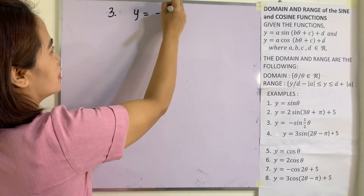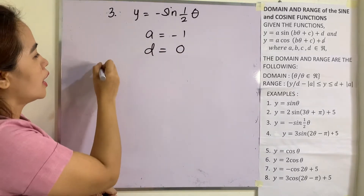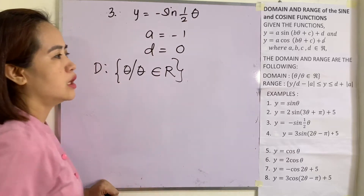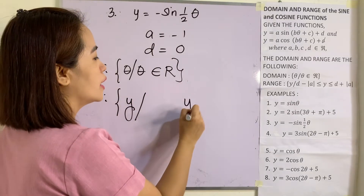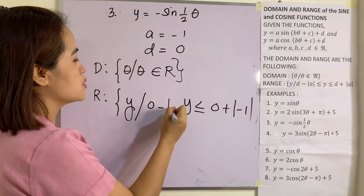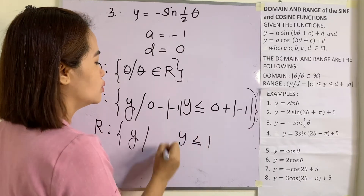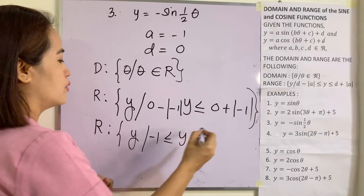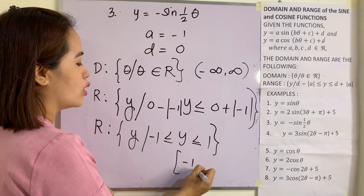Example 3: y = −sin(½θ). Here a = −1 and d = 0. The domain is the set of real numbers. For the range: y ≤ 0 + |−1| and y ≥ 0 − |−1|. Since the absolute value of −1 is 1, the range is y ≤ 1 but y ≥ −1. In interval notation, domain is (−∞, +∞) and range is [−1, 1].